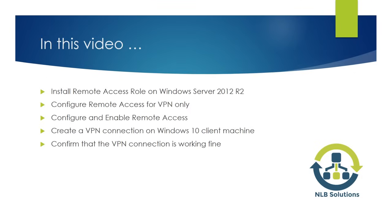In this video I'm going to install the remote access role on Windows Server 2012 R2, then configure it for VPN only. After that I'll switch to the routing and remote access console and configure all the settings needed for users to connect. Then I'll switch to a Windows 10 client machine and configure a VPN connection to confirm the server is working.